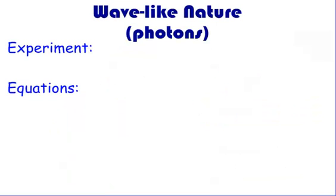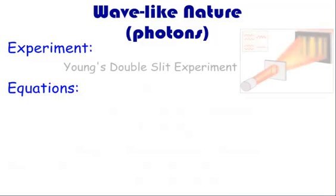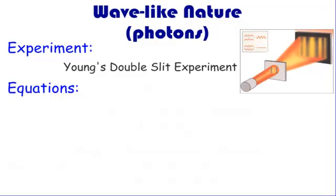First, let's take a look at the wave-like nature of light — as a photon, a photon of light. The experiment that proves that light is a wave is Young's double-slit experiment. We're not going to be taking a look at this experiment until the end of the year, so just put this on the back burner. Young's double-slit experiment proves that we have photons, or waves, of light.